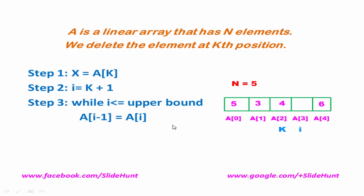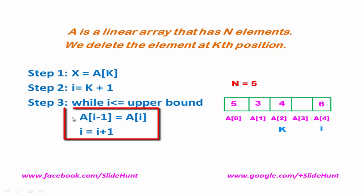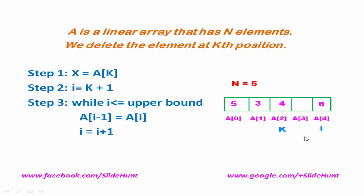Then we increment the value of i by 1, that is i = i+1. For this example i will be 4. Then we again check the condition. If this condition is true we execute those two statements again. Here i equals 4 and the upper bound is also 4, so the condition is true — we shift A[4] to A[3], then increment i. Now i equals 5 and the upper bound is 4, so the condition is false and we exit the loop.